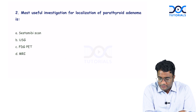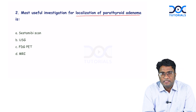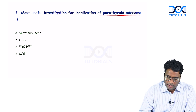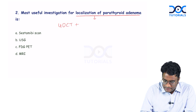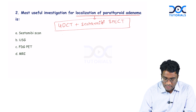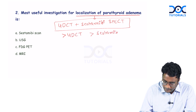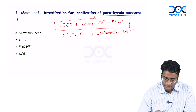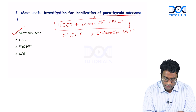Look at the next question: most useful investigation for localization of parathyroid adenoma. This is a repeat topic asked in many exams. The more sensitive investigation is 4DCT plus SESTA-MIBI SPECT. This combination is better than just doing 4DCT alone or SESTA-MIBI SPECT alone. Among the given options, the answer is SESTA-MIBI scan.